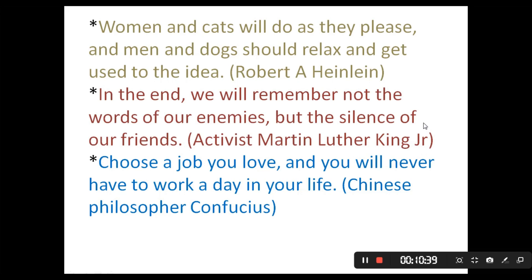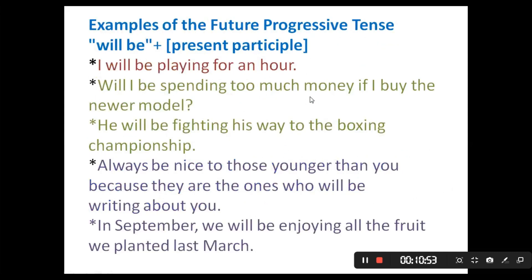'Women and cats will do as they please, and men and dogs should relax and get used to the idea.' 'In the end, we will remember not the words of our enemies but the silence of our friends' — Martin Luther King Jr. 'Choose a job you love; you will never have to work a day in your life' — Confucius. Now here are examples of the future progressive: will + be + present participle. 'I will be playing for an hour.' 'Will I be spending too much money if I buy the newer model?' 'He will be fighting his way to the boxing championship.' 'In September we will be enjoying all the food we planted last morning.'